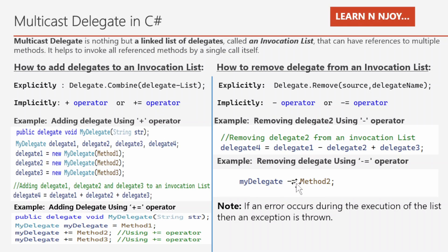Another way is myDelegate -= method2. This removes method2 from myDelegate's invocation list. As you know, with multicast delegates, whatever delegates are in the invocation list will get executed in the sequential order in which they were added. If an error occurs during execution of the list, an exception is thrown and we will need to capture those exceptions and process accordingly.